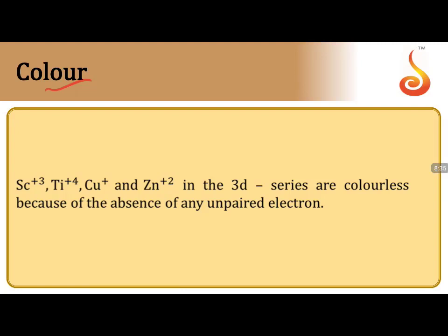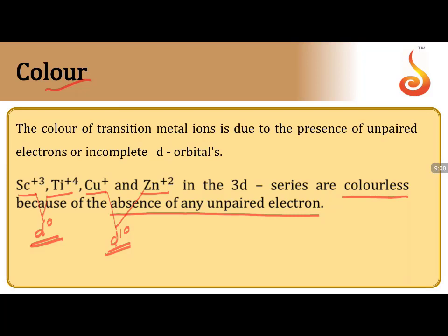For the color-exhibiting property, the presence of unpaired electrons is essential. Sc³⁺, Ti⁴⁺ (d⁰) and Cu⁺, Zn²⁺ (d¹⁰) have no unpaired electrons and are therefore colorless. The color of transition metal ions is due to the presence of unpaired electrons in incomplete d orbitals. All other 3d series ions exhibit color due to d-d transitions — involving splitting of degeneracy into t₂g and eg levels — occurring in the visible region.